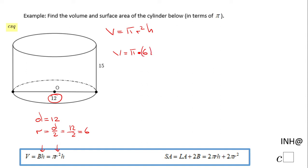So we're going to have 6 squared for the radius times the height of 15. We're going to have 6 squared, that will be 36 times 15, and that will be 540 pi. So the volume of this cylinder is 540 pi.